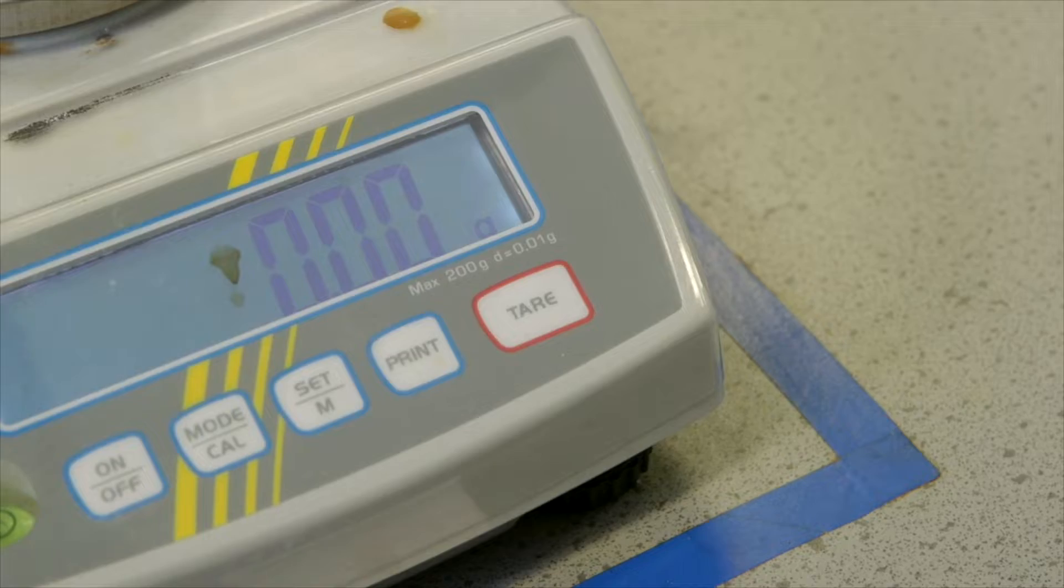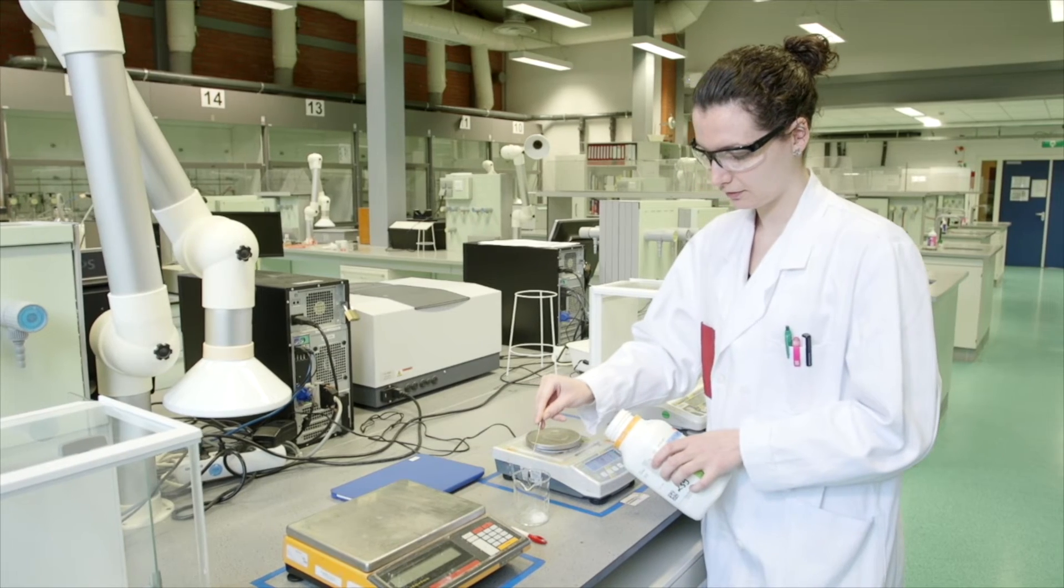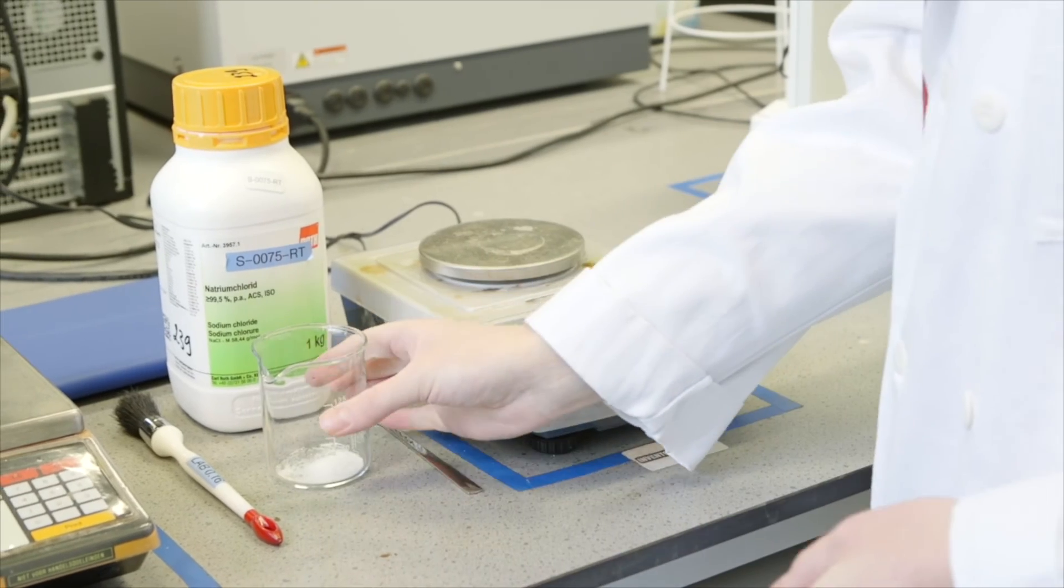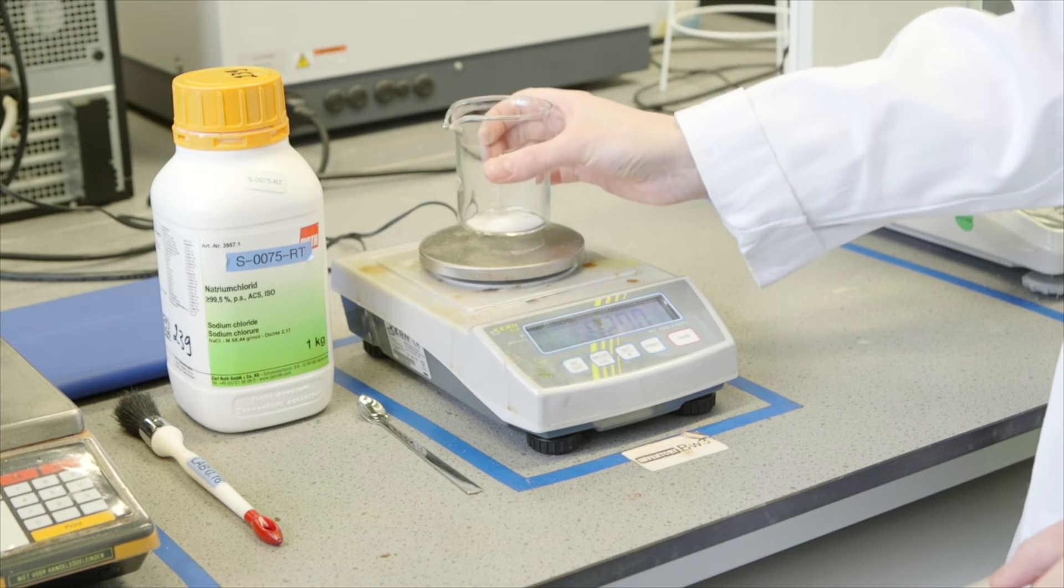With a clean spatula, the desired amount of material is transferred into the beaker. The beaker is again placed on the scales. The remaining mass of residue is noted in the lab journal.